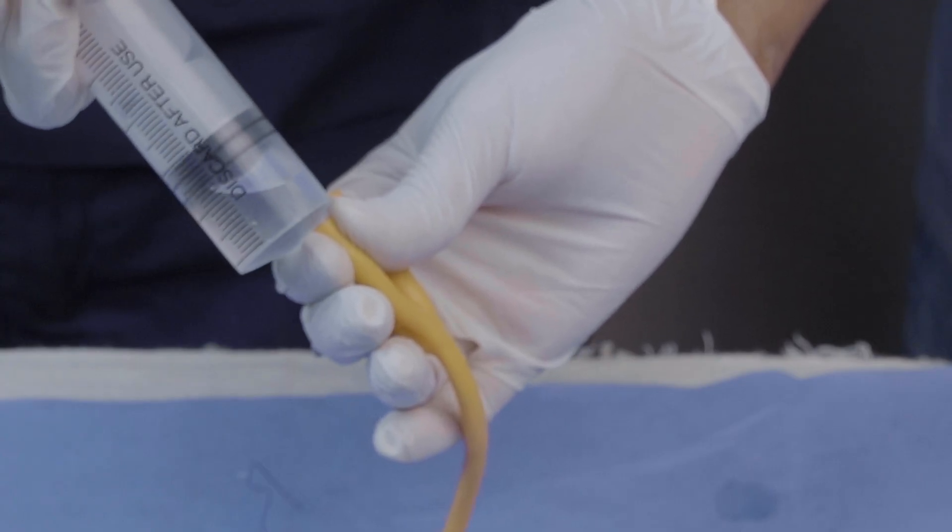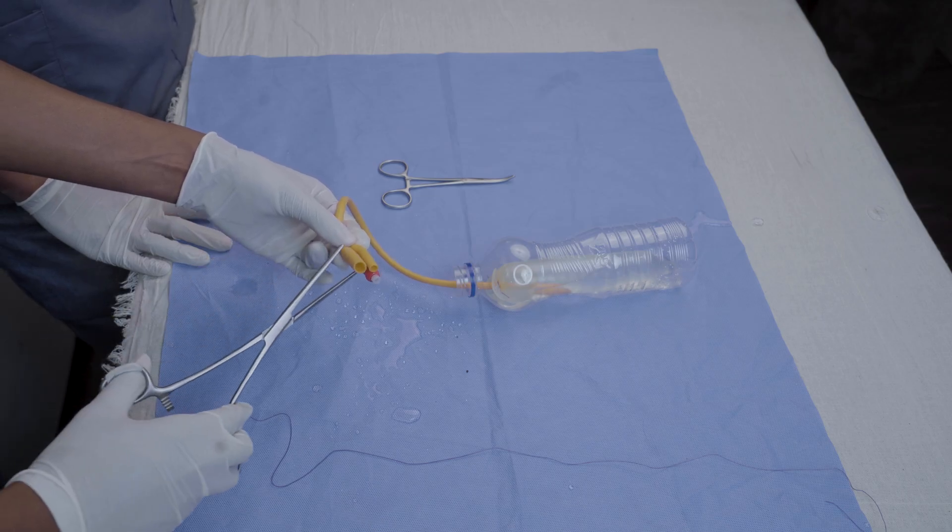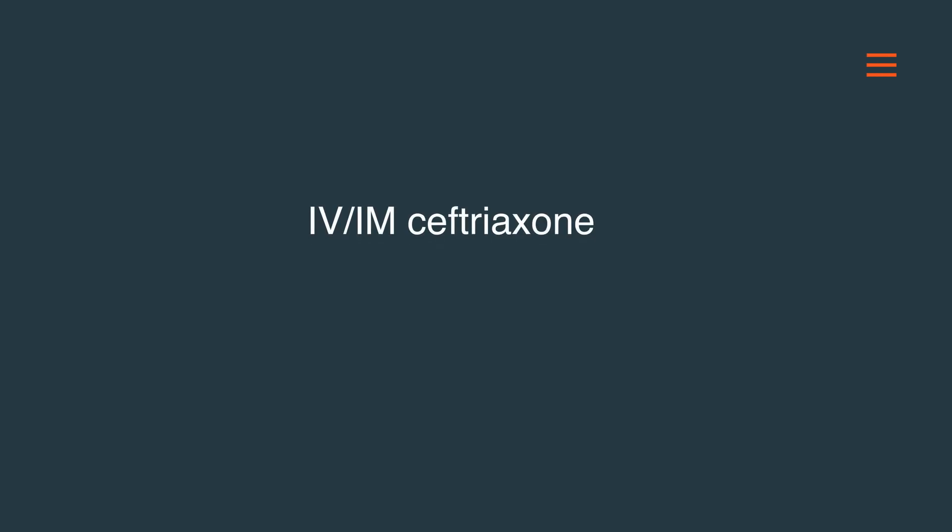If bleeding does not stop, other causes of PPH should be re-examined. Secure the catheter on the thigh of the woman so it does not pull out with her movement. Place the woman in a recovery position. After successful insertion, the mother is ready for careful observation or transfer to a referral facility. A prophylactic dose of broad-spectrum antibiotics such as IV or IM ceftriaxone is recommended when the uterine balloon is placed.